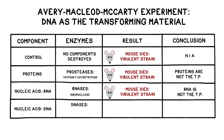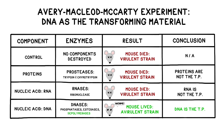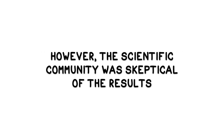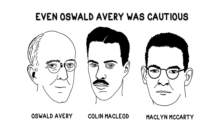Avery, McLeod, and McCarty finally tried DNases—enzymes that destroy DNA. In one instance, the mice survived. Adding phosphatases and esterases to the mixture did not disrupt the transformation process, but adding DNA depolymerases did. When Avery, McLeod, and McCarty added depolymerases to the mixture, the mice survived. This told them that DNA was likely to be the transforming principle. However, despite this evidence, the scientific community was skeptical of Avery's results. Even Oswald Avery himself was cautious, believing it was possible that trace amounts of the transforming principle could have contaminated their DNA samples and that DNA might not be wholly responsible.